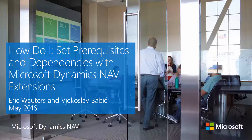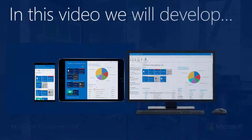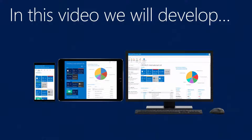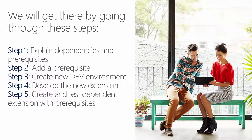Hi, welcome to this how-do-I video in the extension series for Microsoft Dynamics NAV, in which we will show you how to work with prerequisites and dependencies in extensions. This video is based on the extension created in the earlier video 'How do I build a basic Microsoft Dynamics NAV extension.' At the end of this video, we'll have added a prerequisite — the item table — to the existing extension, and on top of that, created a new extension that depends on it. We'll do this in five easy steps.